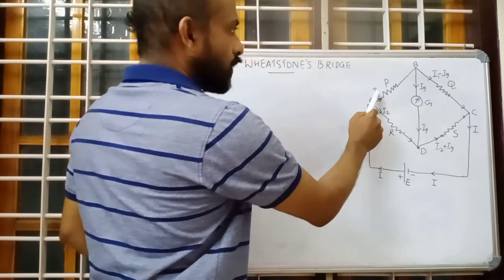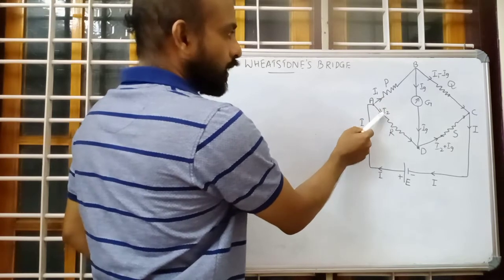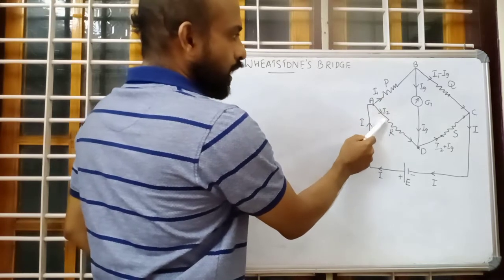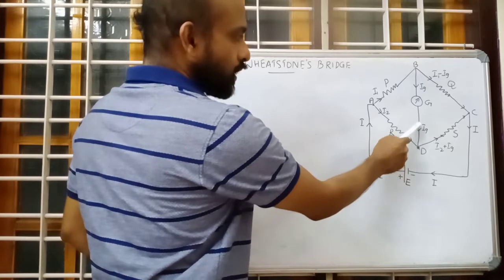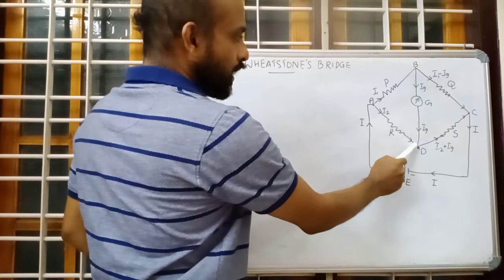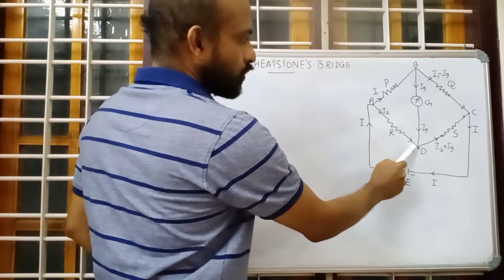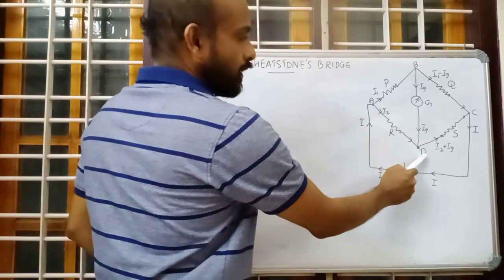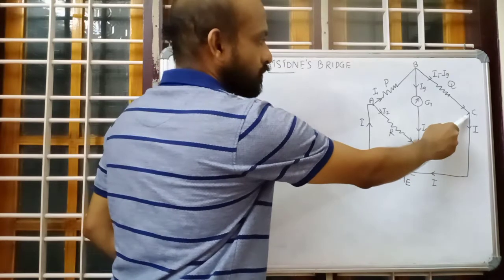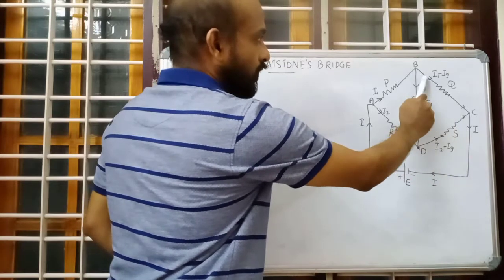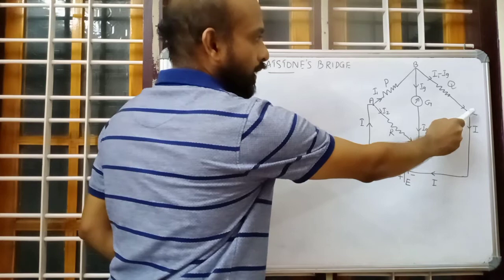From the total current I, some portion is I1 and the remaining is I2. I2 is flowing through resistance R and reaching the junction. At that junction, two currents — Ig and I2 — arrive and combine. After combination, they flow as I2 plus Ig in one direction, and I1 minus Ig flows in another direction.